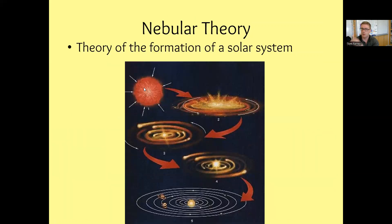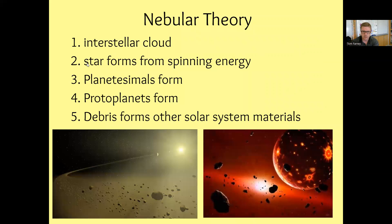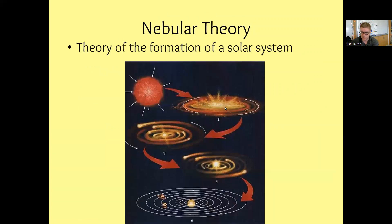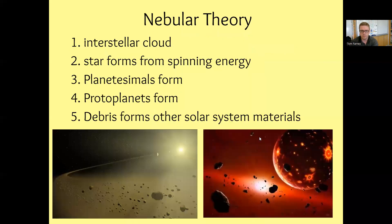So again, number one, we have our interstellar cloud, gravity begins kind of condensing in on it, so some of that material starts to form. Two, a star forms from spinning energy. That's what we get here, we get kind of like the beginning formation of our star, our sun. So this is like the tail end of the protostar step, and then we're able to start to put our dude on main sequence. Step number three, we got planetesimals forming. These are these really tiny rock objects starting to orbit around the center point of our sun.